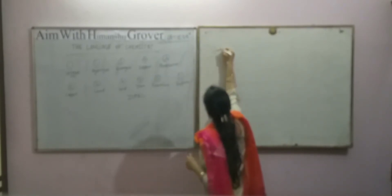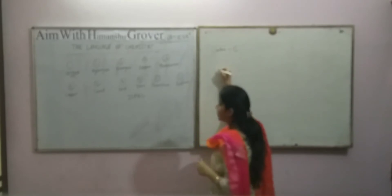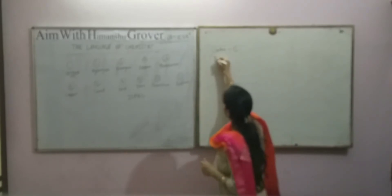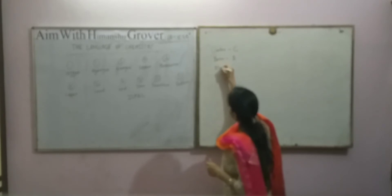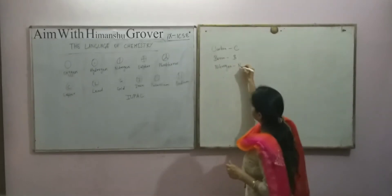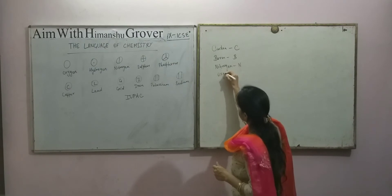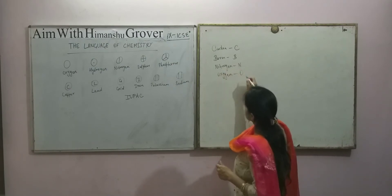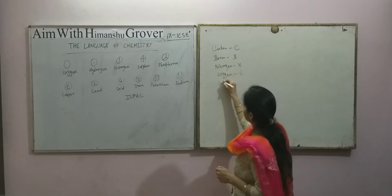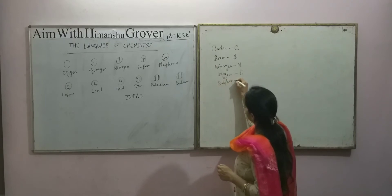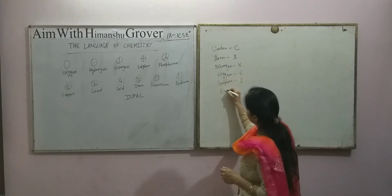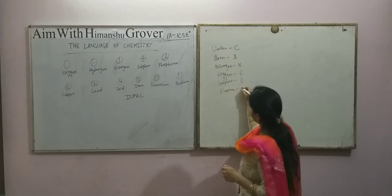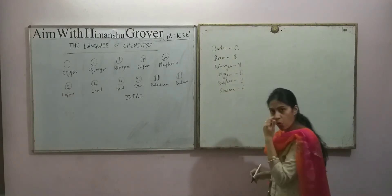The first method is very simple: elements are represented by a single capital letter. Carbon is represented by C. Boron is represented by B. Nitrogen is represented by N. Oxygen is represented by O. Sulfur is represented by capital S. Fluorine is represented by capital F, and so on.